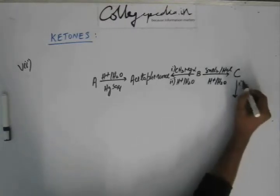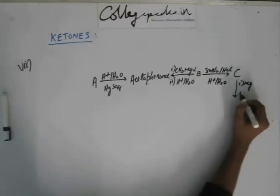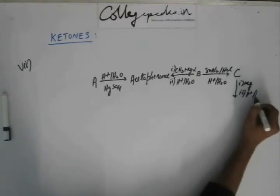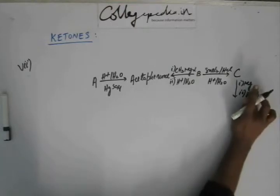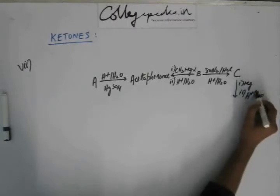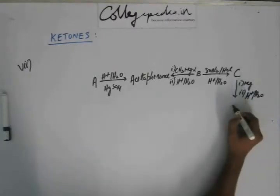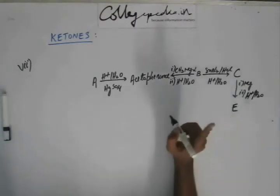Now on B if I add SnCl2, HCl, and then I add H+, H2O, I would get C. I will get E because...